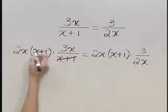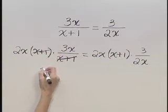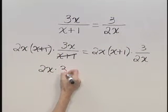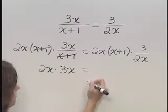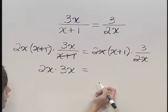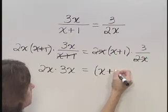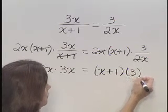Now we can divide x plus 1 into itself. This leaves on the left the product 2x times 3x. On the right dividing 2x into itself, that goes in there one time. That's going to leave the product x plus 1 times 3.